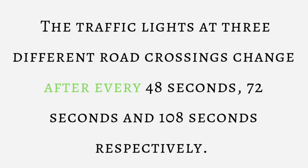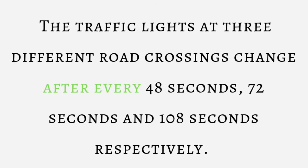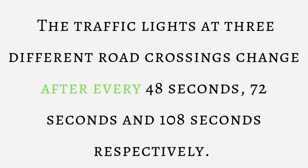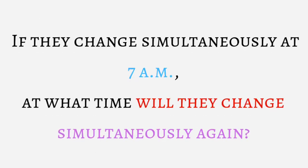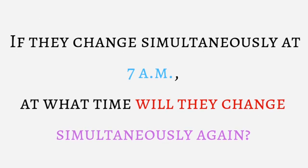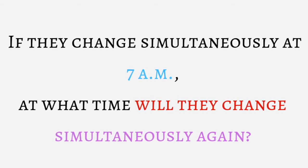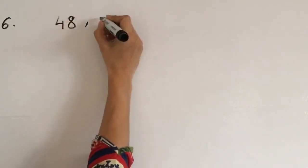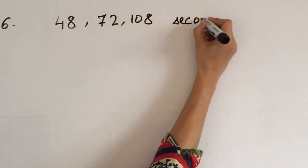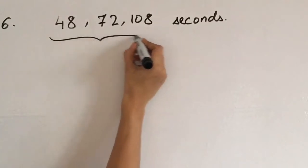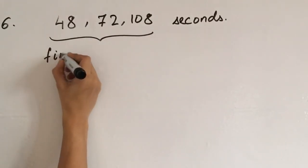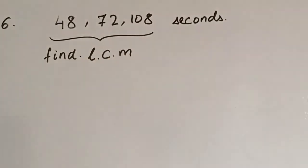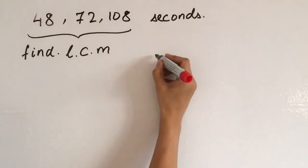Next question. The traffic lights at three different road crossings change after every 48 seconds, 72 seconds and 108 seconds respectively. If they change simultaneously at 7 a.m., at what time will they change simultaneously again? In this question, in three timings, if we get a common multiple, then we can say that the traffic lights will simultaneously change again. So what we are going to do is we will find the LCM here.